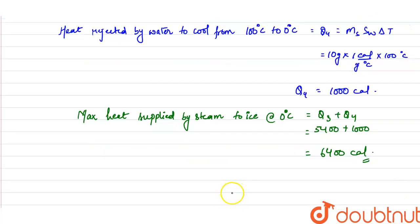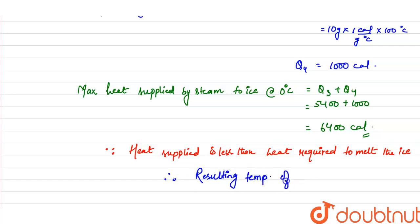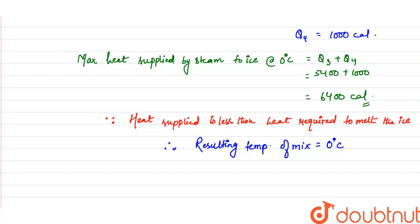The maximum heat supplied by the steam (6400 cal) is less than the heat required to melt all the ice (8000 cal). Therefore the resulting temperature will be 0°C, and since heat supplied is insufficient to melt all the ice, the resulting mixture will still contain ice. The final temperature of the mixture is 0°C.